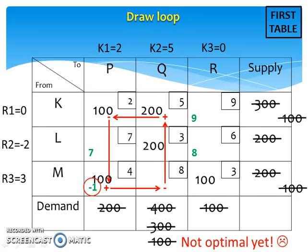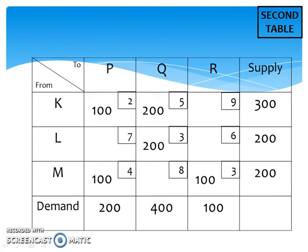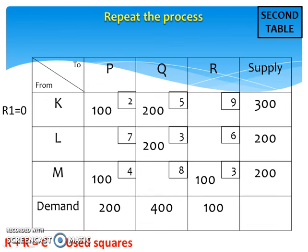We should actually do this at a new table. So our new table, which is the second table, looks like this. Now that we are at a new table, we need to repeat the whole process all over again, beginning from setting R1 equal to 0 and calculating all R's and K's. Remember that to calculate R and K, we need to use the formula R plus K equals C, which is only applied to U squares.